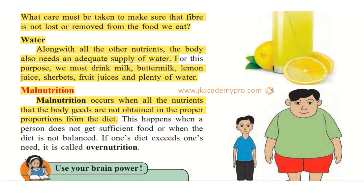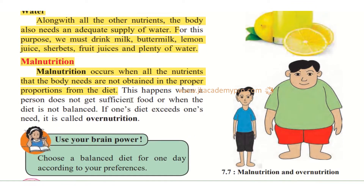There are some children who love to eat burgers and fries, but don't want to eat vegetables, fruits, and cereals. So our body will not get a balanced diet and we may suffer from malnutrition. This happens when a person does not get sufficient food or when the diet is not balanced — either not eating proper food, or eating a lot of food but not in the right proportion.